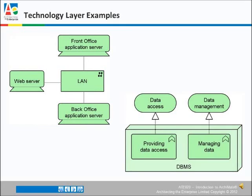Here in the technology layer, on the left we have a number of servers, which are devices. These devices are interconnected through a LAN. On the right-hand side, at the bottom, the three-dimensional box is a node, which is a database management system. It performs two infrastructure functions — you see the chevron in the two boxes is the function notation. The left one, providing a data access function, realizes a data access service. And the other one, managing data, realizes a data management service.